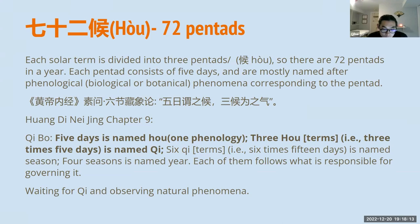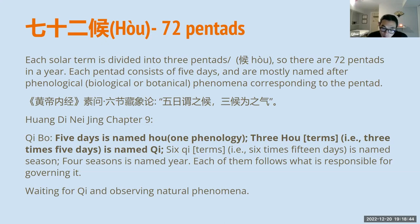The 24 solar terms in Chinese is called jie qi. Jie is different from qi. There are six qi, but there are only four jie. The rest are qi. The four jie are the winter solstice, the summer solstice, the spring equinox, and the autumn equinox.